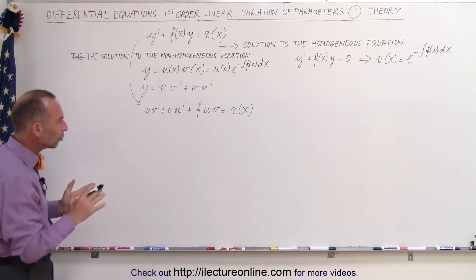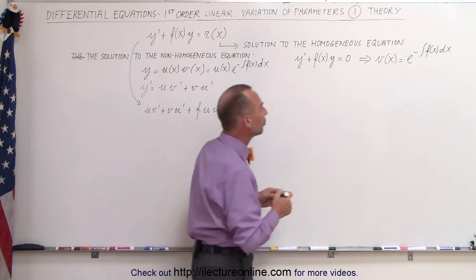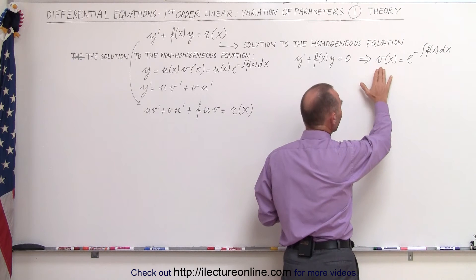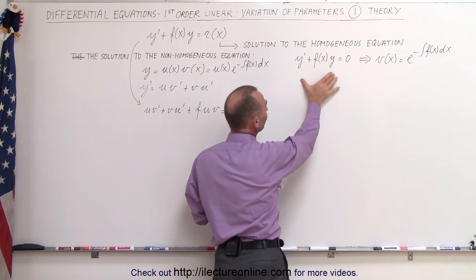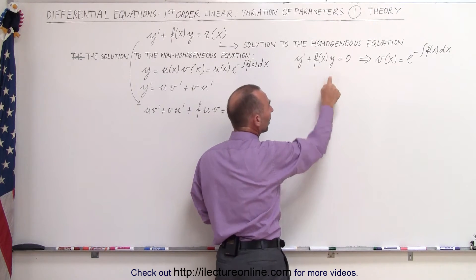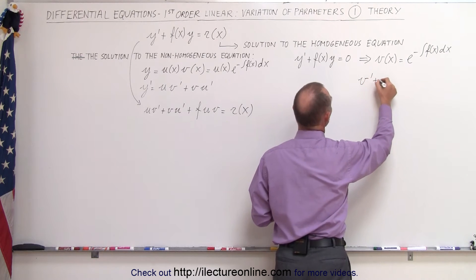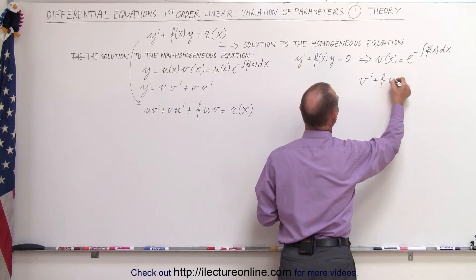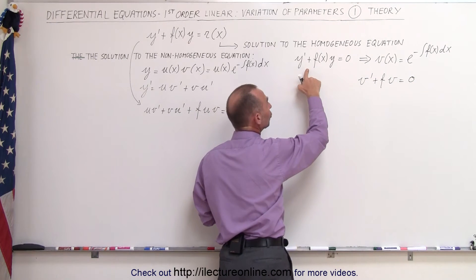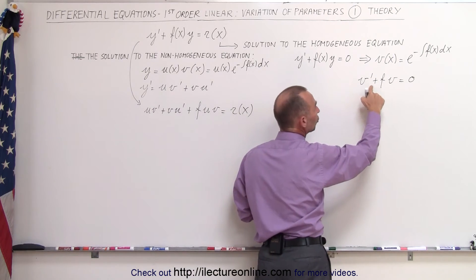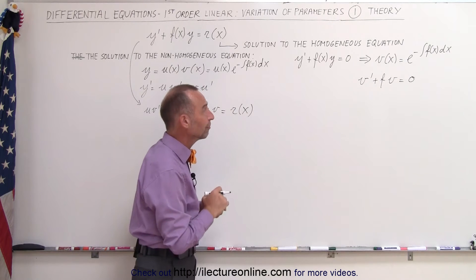Now we need to rearrange those terms in a way that makes sense. If v of x is a solution to the homogeneous part of the equation, and since the homogeneous part can be written as y prime plus f of x times y, then we can conclude that v prime plus f times v must equal zero. That is true since if this is the solution to the homogeneous part, then this must be the solution to the homogeneous part as well, and we can write that as a function of v.